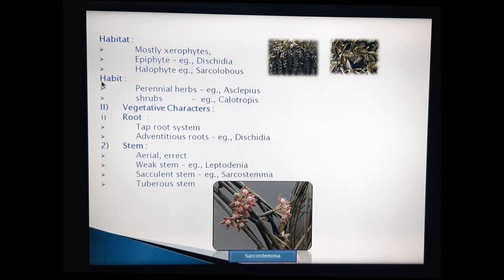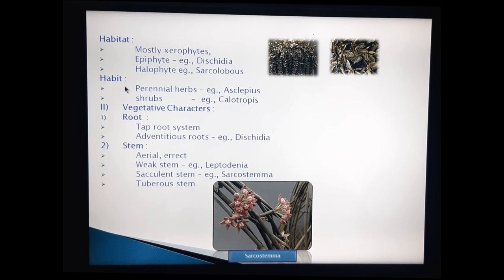Next, habit. Perennial herbs are present in this family — example is Asclepias. And Calotropis species are shrubs. This is the habit.